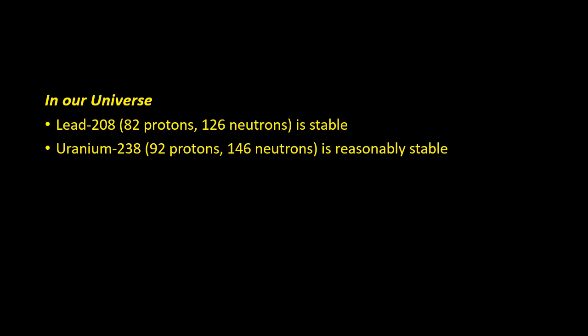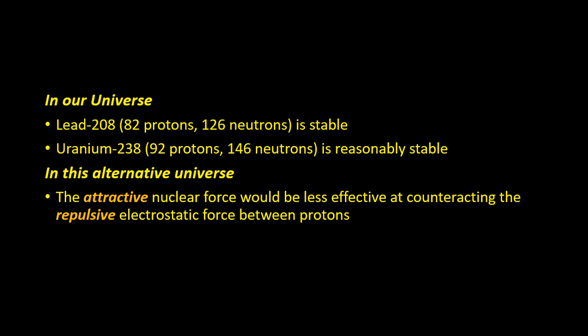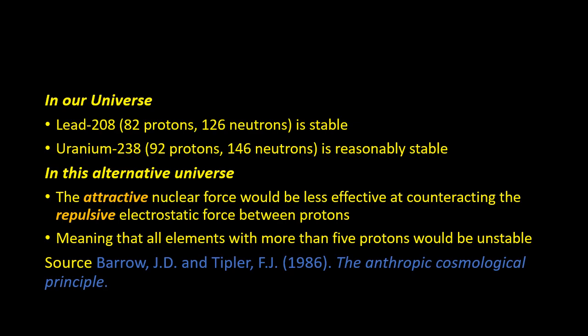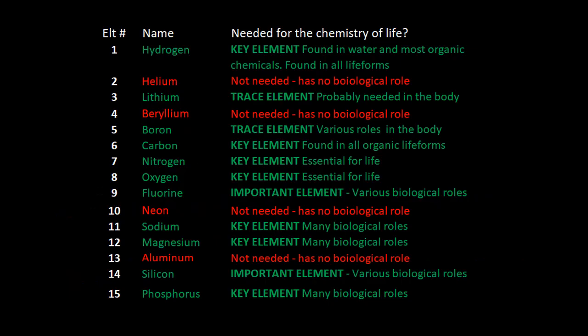As we've seen in our universe, lead 208 is the heaviest stable nucleus, and Uranium 238, which has 92 protons and 146 neutrons, is reasonably stable, has a half-life roughly the same age as the life of the Earth. But in this alternative universe, the attractive nuclear force would be less effective at counteracting the repulsive electrostatic force between protons, meaning that all elements with more than five protons would be unstable.